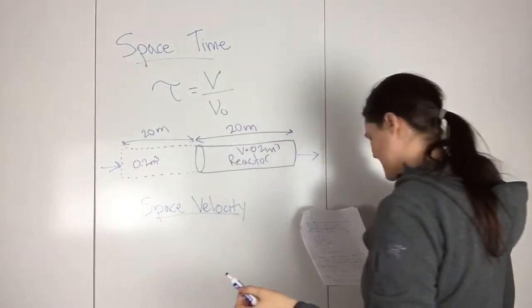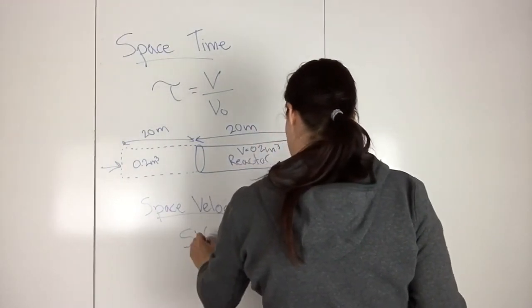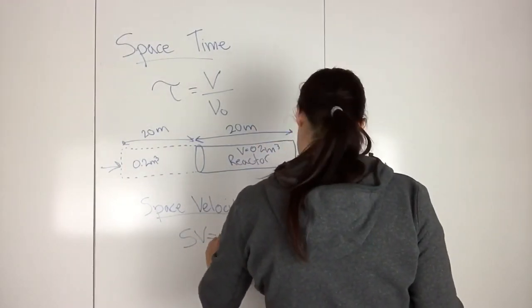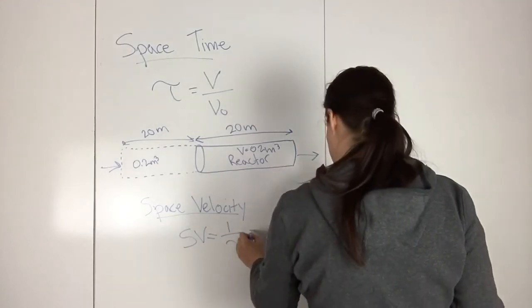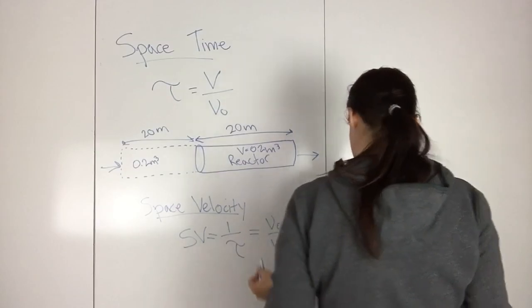Space velocity is 1 over tau, so 1 over the space time, which equals V naught over V.